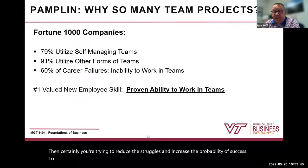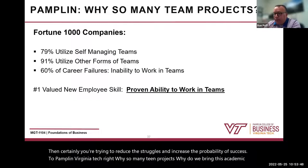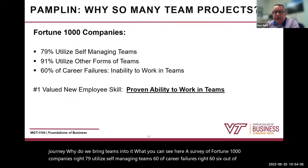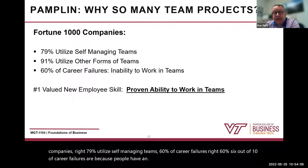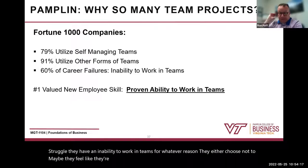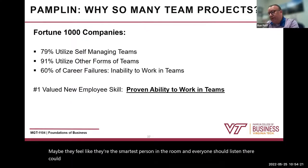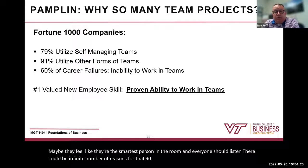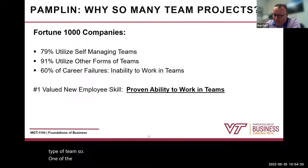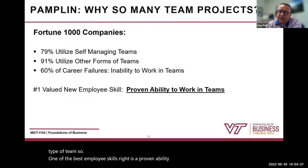So why does Pamplin at Virginia Tech have so many team projects? A survey of Fortune 1000 companies shows that 79% utilize self-managed teams. 60% of career failures — six out of ten — are because people have an inability to work in teams, for whatever reason: they choose not to, or they feel like they're the smartest person in the room and everyone should listen. 91% of Fortune 1000 companies utilize some type of team. One of the best employee skills is a proven ability to work in teams — very important.